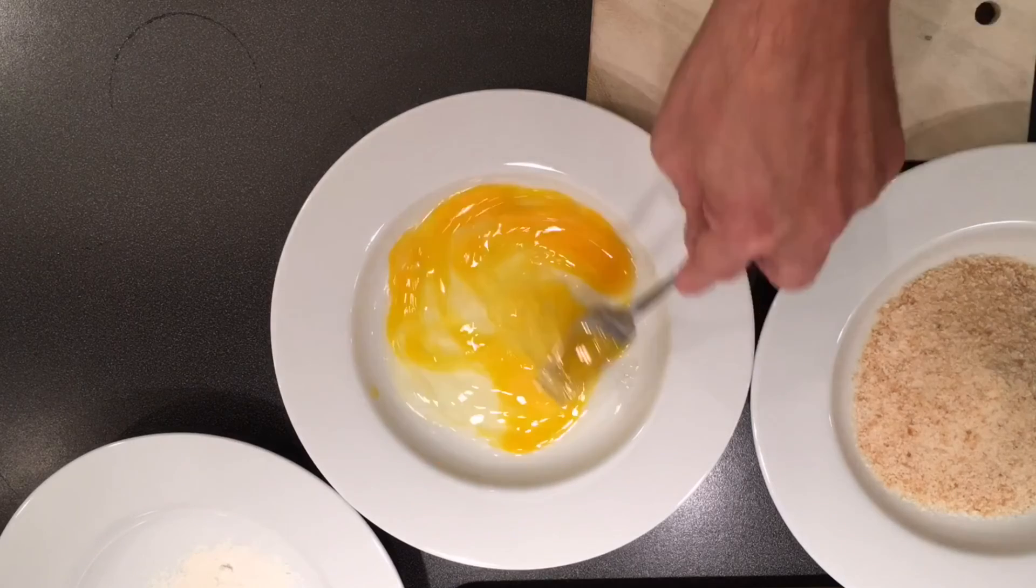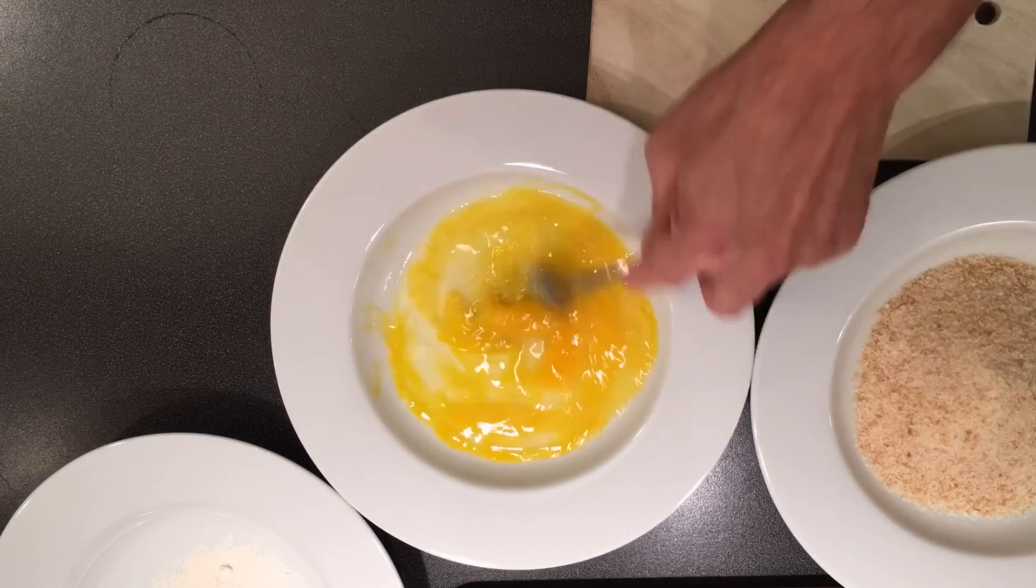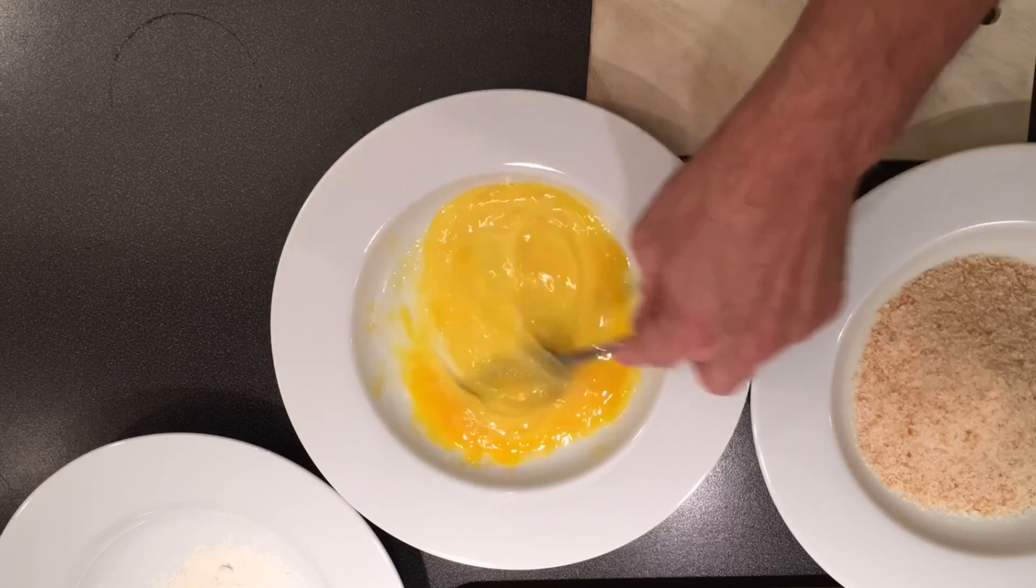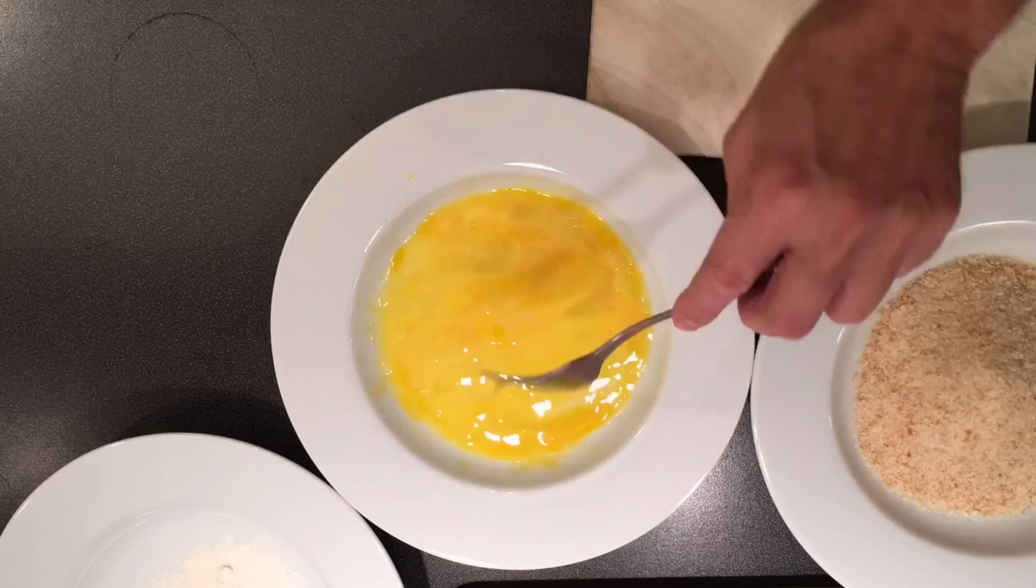For example, if you break and scramble an egg, its entropy increases as it moves from ordered to disordered state.